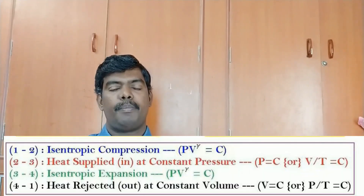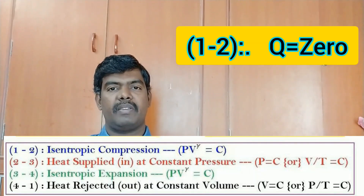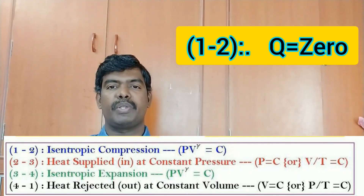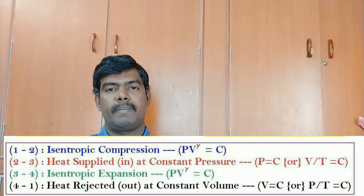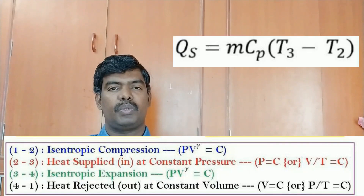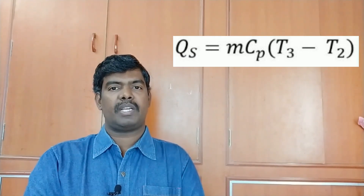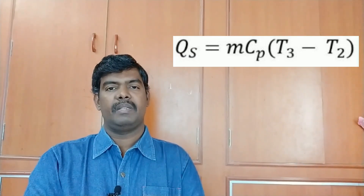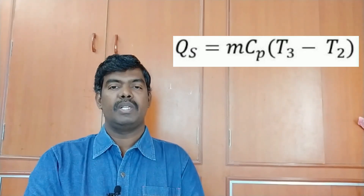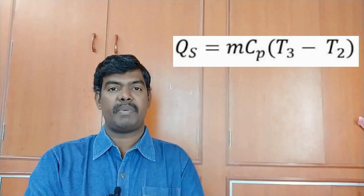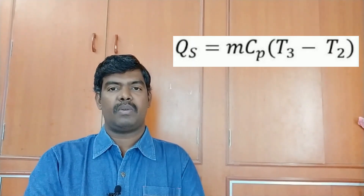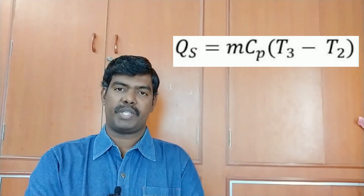Now we write the equations for each process. For process 1 to 2, isentropic compression: there is no heat transfer, so Q(1→2) = 0. For process 2 to 3, heat supplied at constant pressure: Q(2→3) = Qs = mCp·ΔT, because it is a constant pressure process. The specific heat at constant pressure Cp applies here.